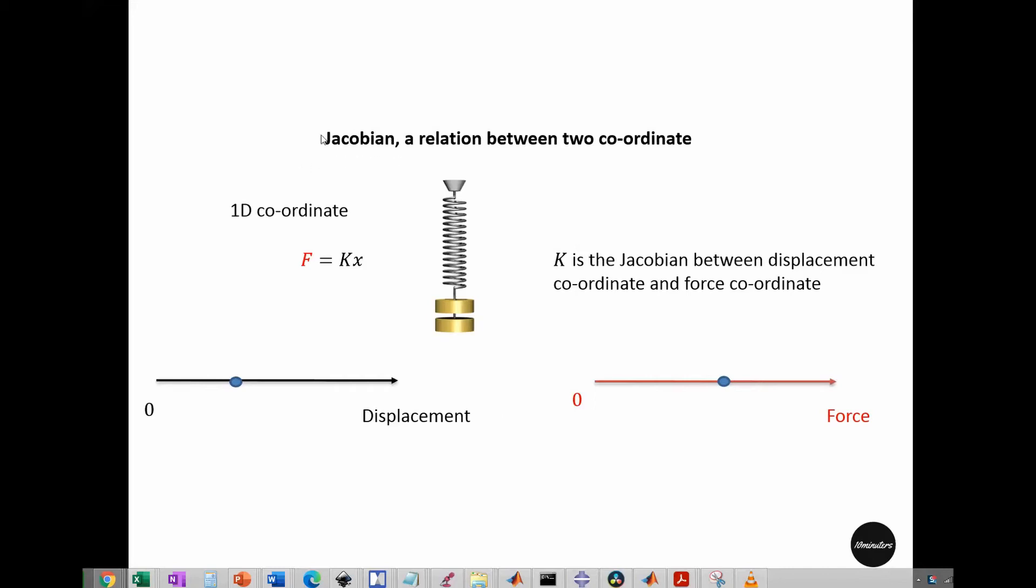Today we will develop intuition of Jacobian, a relation between two coordinate systems. To pull this spring by x distance, the required force is f. The displacement is in this coordinate system and the force is in this coordinate system.